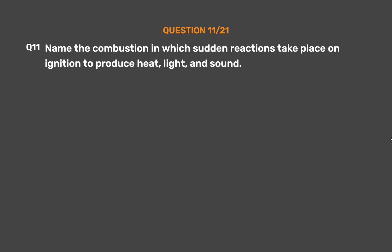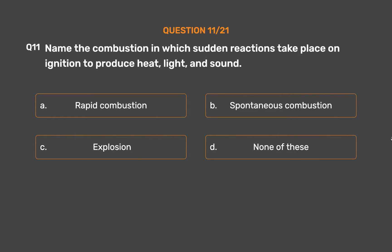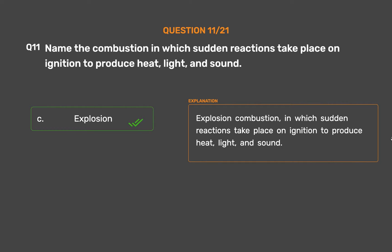Question number 11: Name the combustion in which sudden reactions take place on ignition to produce heat, light, and sound. Option A: Rapid combustion. Option B: Spontaneous combustion. Option C: Explosion. Option D: None of these. The correct answer is Option C: Explosion. Explosion is the combustion in which sudden reactions take place on ignition to produce heat, light, and sound.